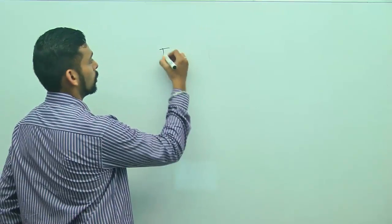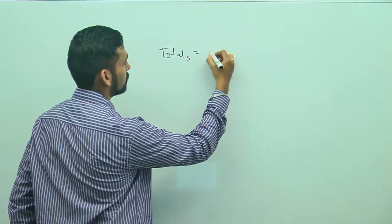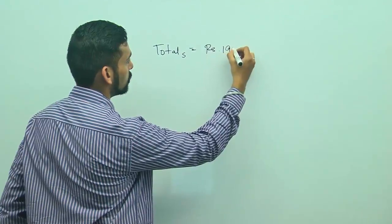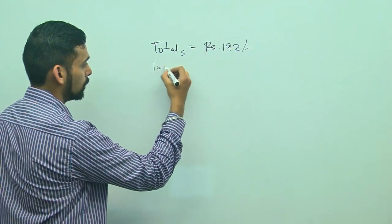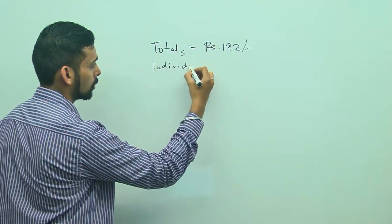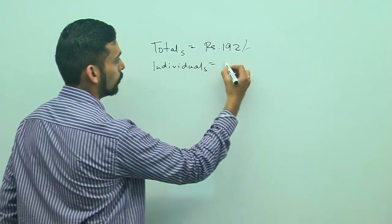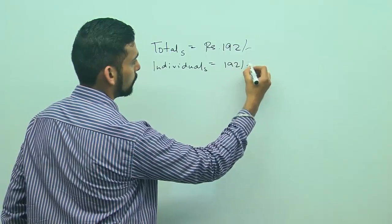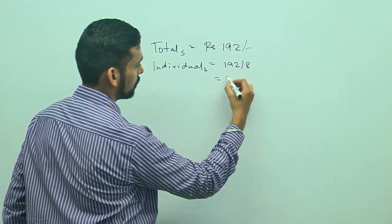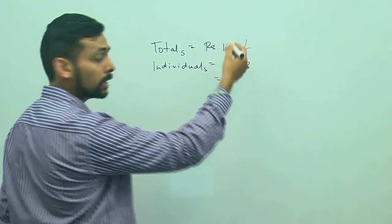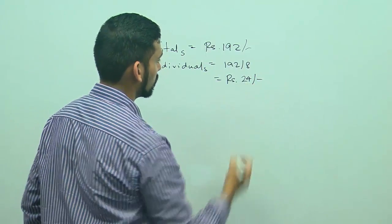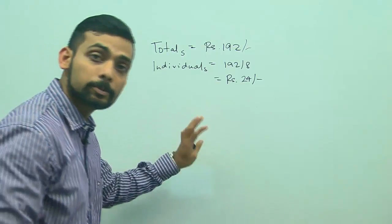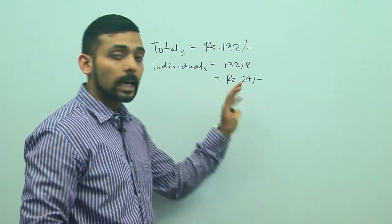So the total spend is rupees 192. If I divide this among 8 people, the individual spend will be 192 divided by 8. This is going to give me, if I divide 192 by 8, I am going to get 24. So rupees 24 has been spent by each person.